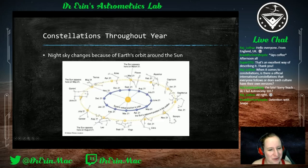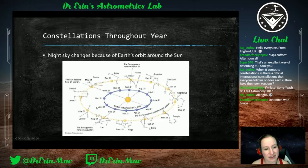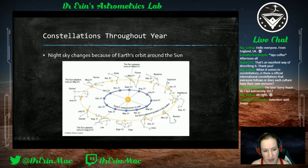Those stars are still in the sky during the day, but the sun is up so we can't see them because of the atmosphere. When it's nighttime, we're on the side facing away from the sun and we see all the stars on that side. Six months later, the stars we saw at night are now in our daytime sky, and we can see the stars that were behind us before.